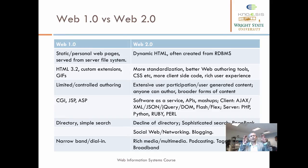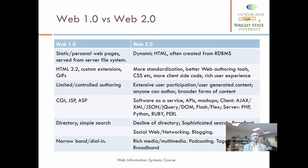With mashups, you can get data from two different sources and combine them on the front end. Client-side technologies like Ajax exist, and XML is increasingly being replaced by JSON. There are also DOM, Flash, and Flex technologies for visually rich representations. On the server side, there is a lot of use of PHP, Python, Ruby, and Perl. We also had simple web directories and then simple search.